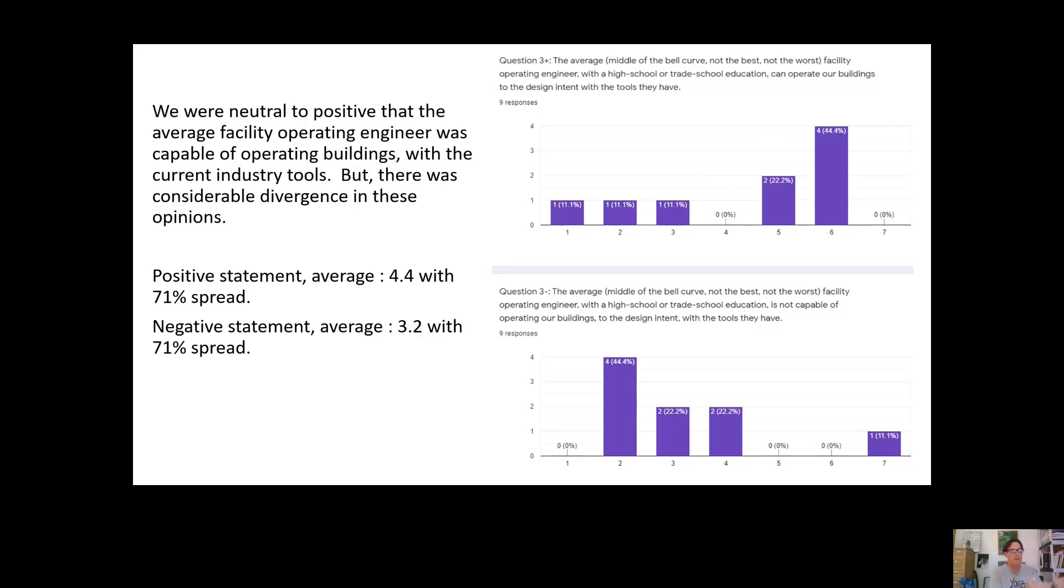I'm not going to be shy about interjecting my opinion about what I think these results mean. The answer to this should be yes and strong agreement. So I think the fact that we're neutral, that we believe that the average operating engineer maybe can operate our buildings with the tools that they have, we don't all strongly agree with that. I think that definitely indicates the state of things and where we have some opportunities for growth.